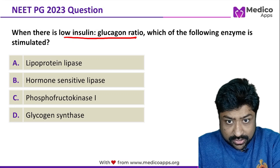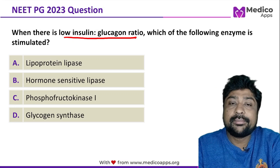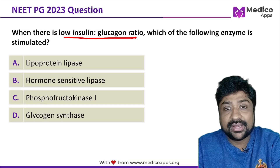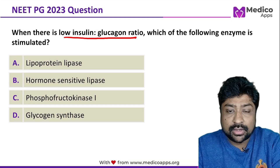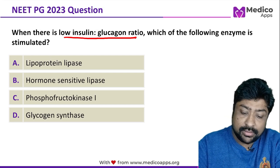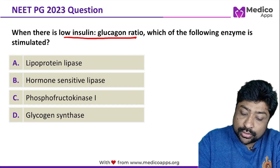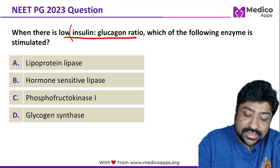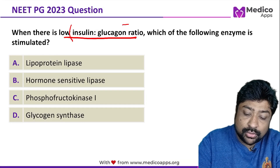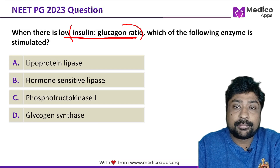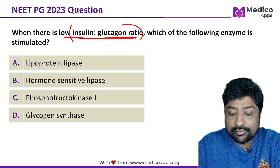This type of question has been asked multiple times in NEET PG exams, even in INICET. Let me break this question into a very simple format. First, you have to understand what the insulin-glucagon ratio is, and once you understand that, the next part of the answer will become very clear.